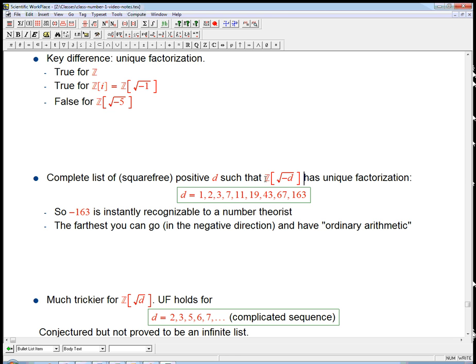it's called a ring, this kind of algebraic object, does that ring have unique factorization? It turns out that these are the numbers. And so if you'd say to a number theorist, let's look at some totally random number, let's say minus 163, they'll stop you and they say, that's not random.